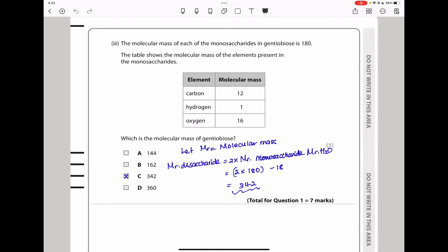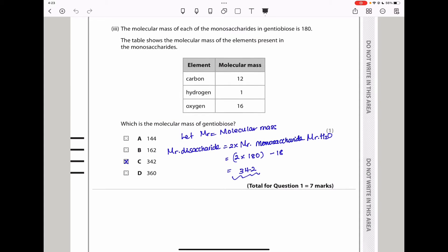The molecular mass of each monosaccharide in gentiobios is 180. The table shows the molecular mass of the elements: carbon is 12, hydrogen is 1, and oxygen is 16. Which is the molecular mass of gentiobios? Remember this is a disaccharide. To find the molar mass of the disaccharide, it has to be two times the molar mass of the monosaccharide minus the molar mass of water. So this is going to be 2 times 180 which is 360 minus 18 giving us 342 as the answer. So the answer here should be C.